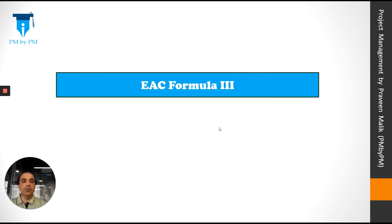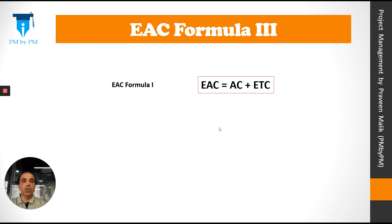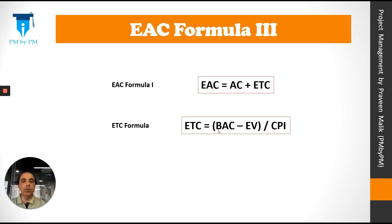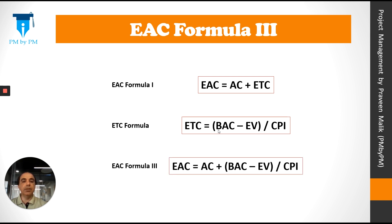Let's look at another formula. EAC Formula 1 was EAC = AC + ETC. From the ETC video, we know that ETC = (BAC − EV) / CPI. Replacing ETC in the EAC formula, EAC Formula 3 becomes: EAC = AC + (BAC − EV) / CPI.